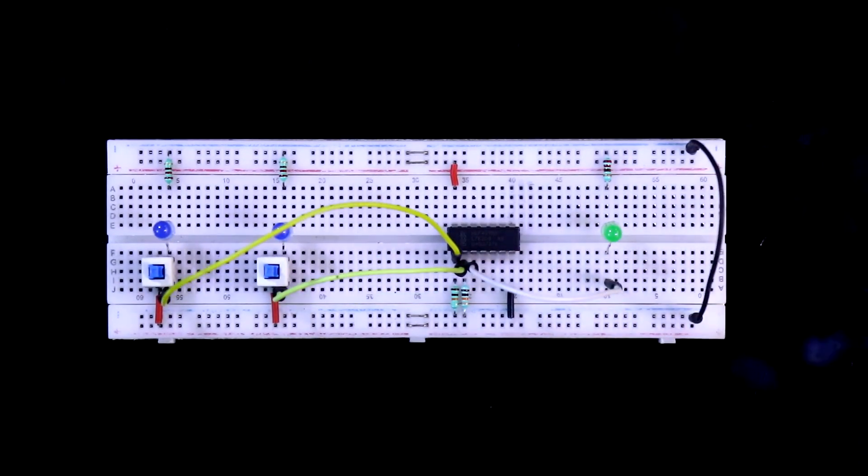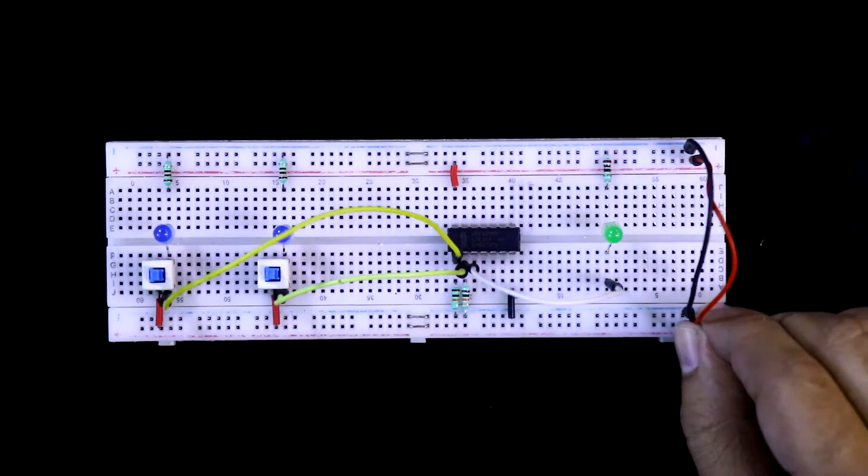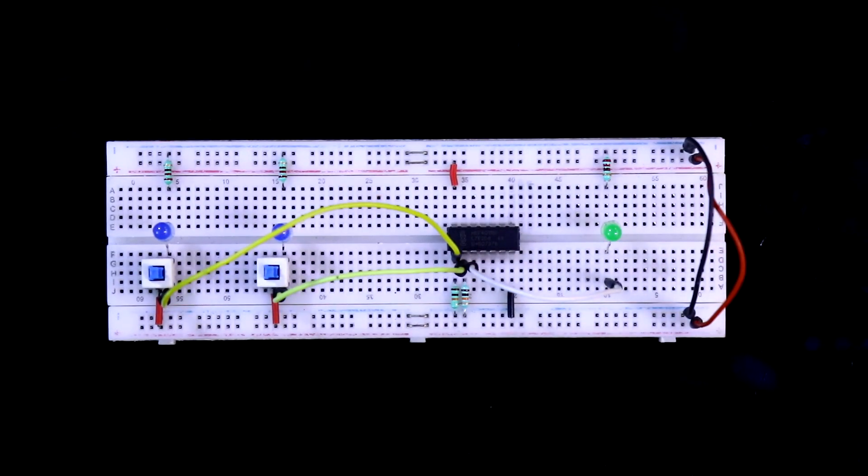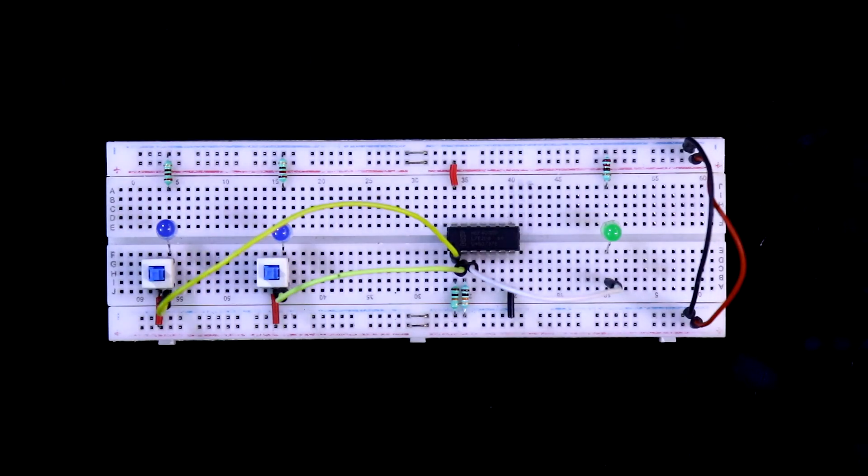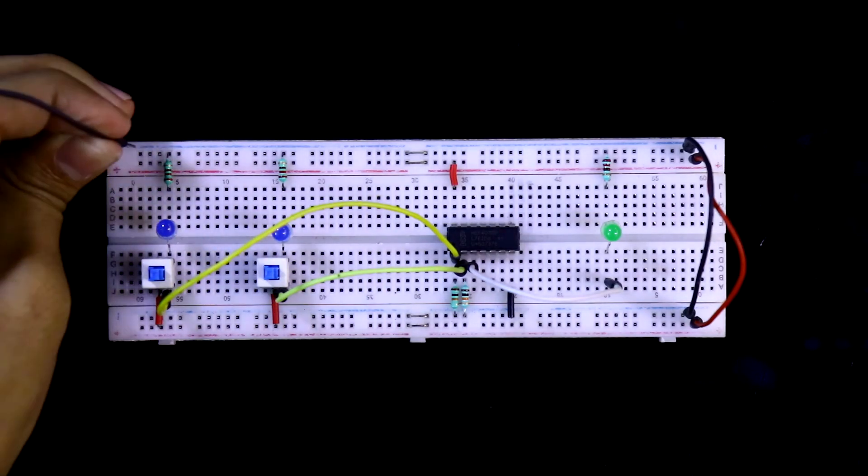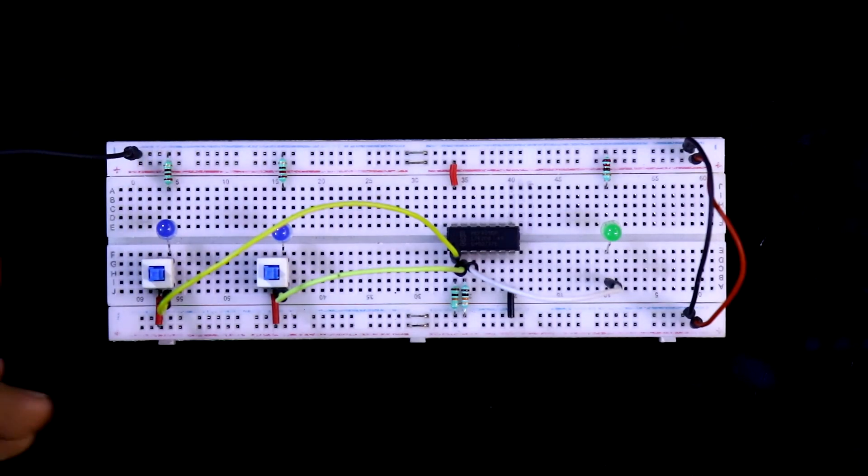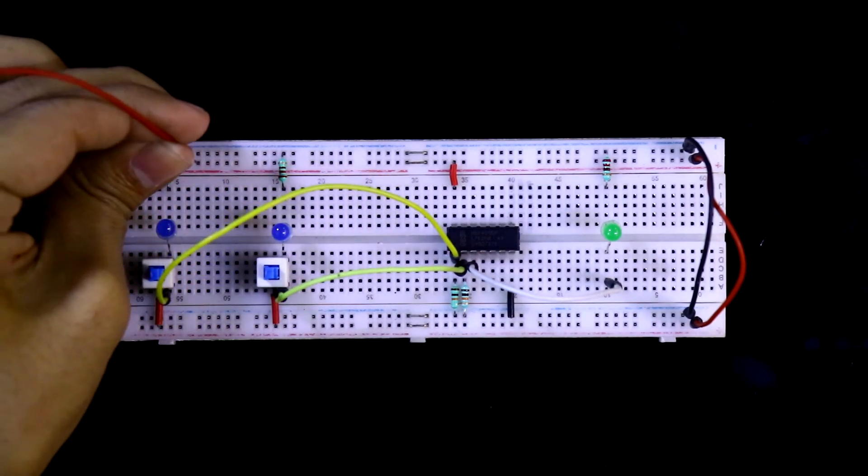Positive and negative rails are connected together. So this is how we have completed the breadboard connection. Now we will see the output. I am connecting 5V power supply. Here it is negative and this is the positive.